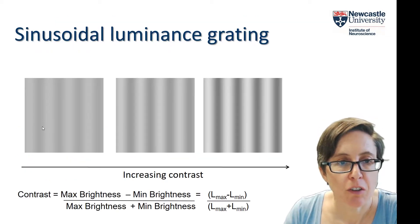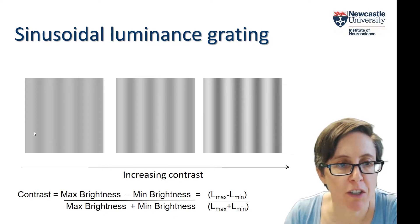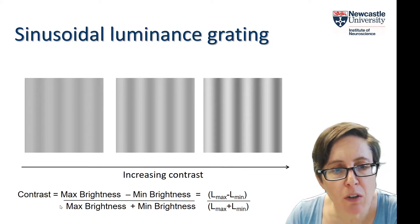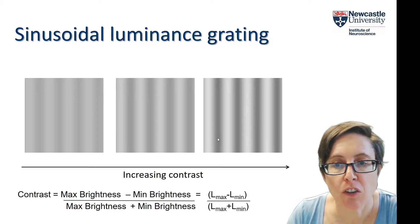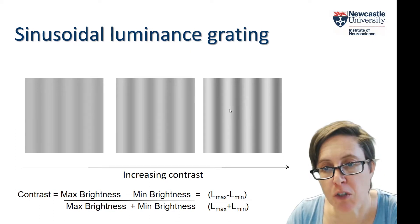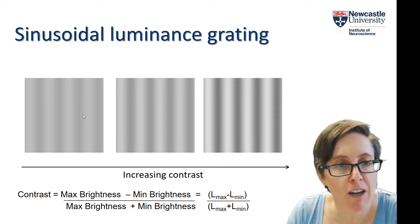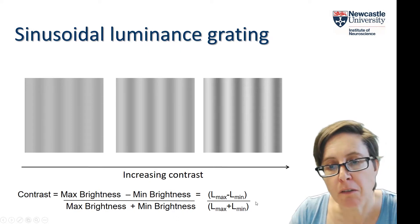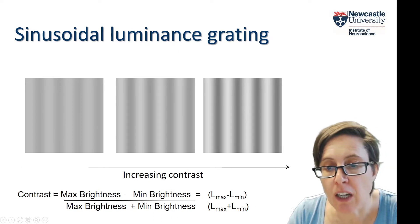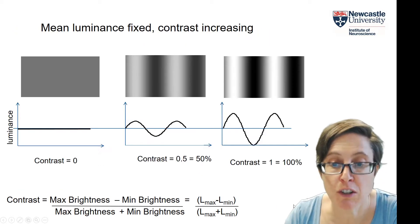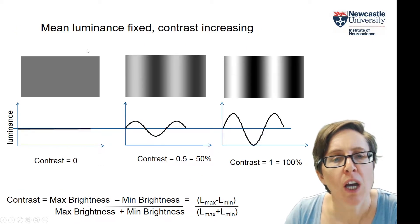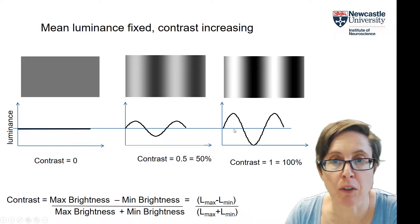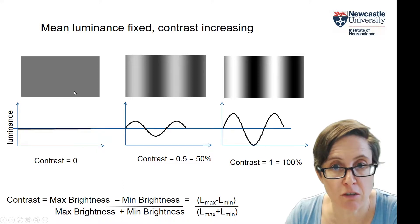Here are three sinusoidal luminance gratings whose contrast is increasing from left to right. The formula captures this: for the higher contrast grating, the difference between Lmax and Lmin is clearly greater than for the low contrast grating. The effect of the denominator is to make contrast invariant or independent of the mean luminance. These three gratings each have the same mean luminance, but the contrast is increasing from left to right.